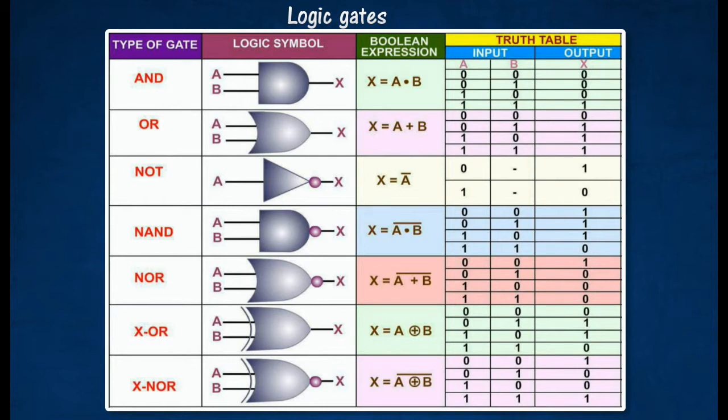There are 7 basic logic gates: AND, OR, NOT, NOT AND, NOT OR, EXCLUSIVE OR, AND EXCLUSIVE NOT OR.